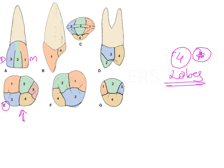For incisors, the four lobes are: mesial, distal, labial, and lingual. For premolars, there are again four lobes, but instead of labial it is called buccal - so there is a mesial, a distal, a buccal, and a lingual lobe.